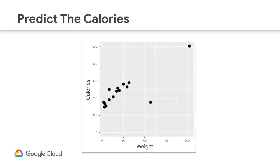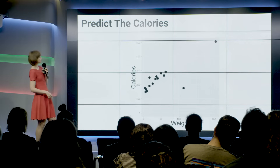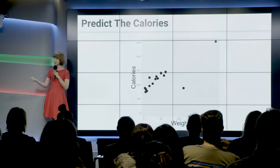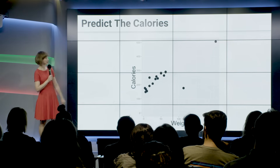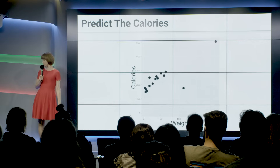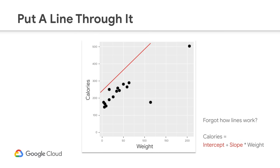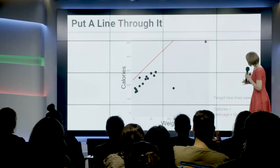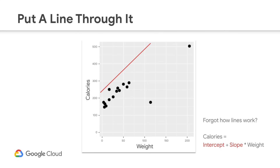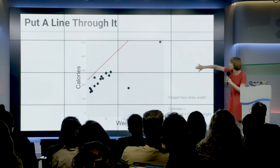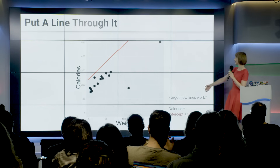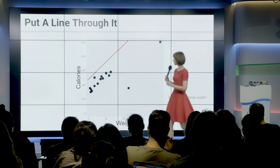As we look at this, we ask ourselves: is there anything going on, or is weight completely useless here? Since there's something to it, maybe we'll go ahead and try it. Regression is about putting lines through stuff, so why don't we put a line through it? The recipe — the model — is simply intercept plus slope times the weight. We have two numbers in red that we have to find to determine where the line goes, and then we pop the weight in there and read the calories off of it.